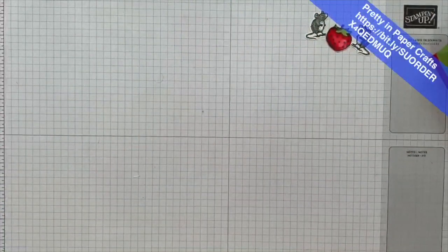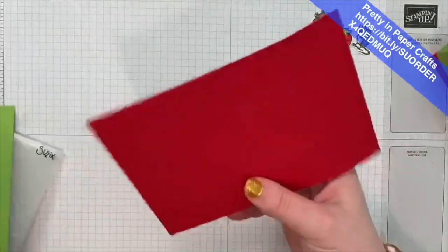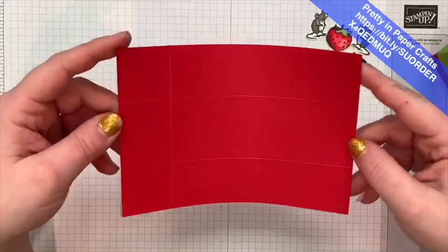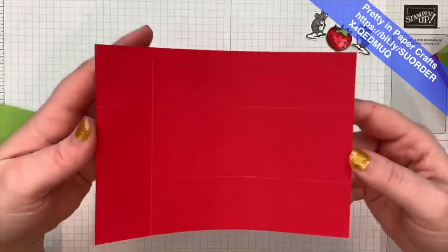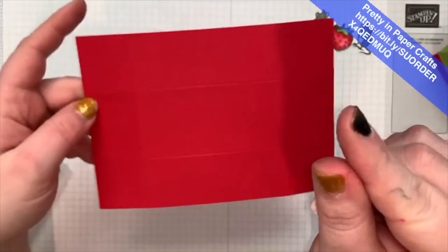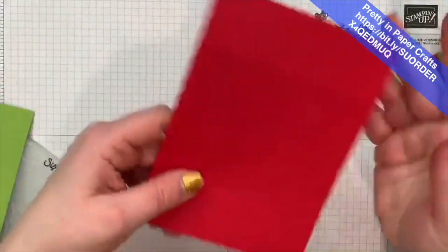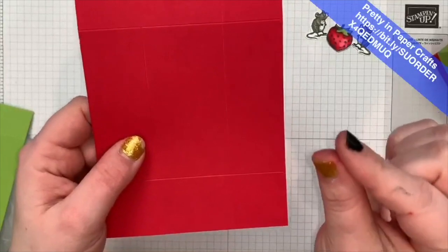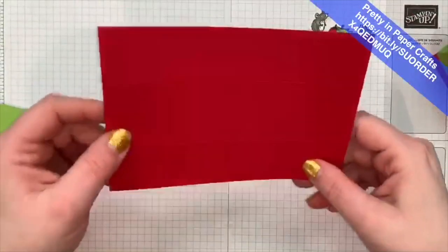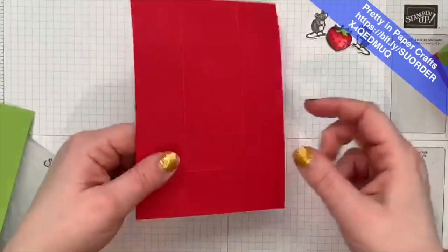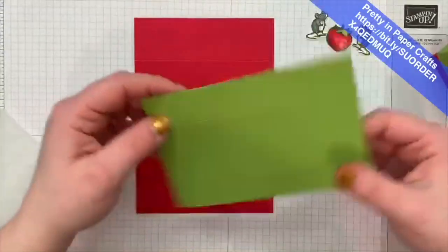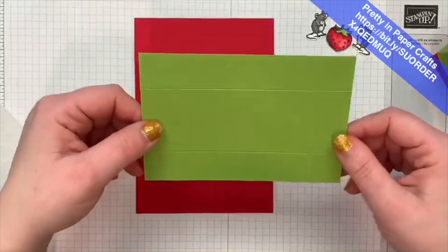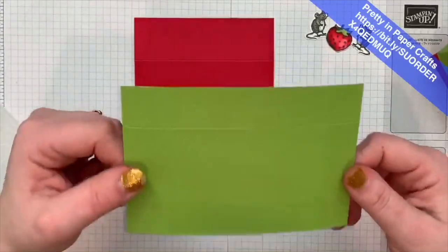So, for the box. The bottom of our box is 4 and 15/16ths. So, almost the tiniest little line next to 5. And then, it's 6 and 15/16ths. So, again, that tiny little line next to the 7. So, 4 and 15/16ths by 6 and 15/16ths. Say that six times fast. And then, the top lid portion is 4 inches by 6 inches. So, that's a lot easier to remember. 4 by 6.